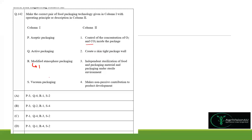Creating a skin-tight package wall occurs in vacuum packaging — when vacuum is created, all air is removed and the package skin tightly forms on the surface, so S matches option 2. Independent sterilization of food and packaging materials under sterile environment describes aseptic packaging, so P matches option 3.